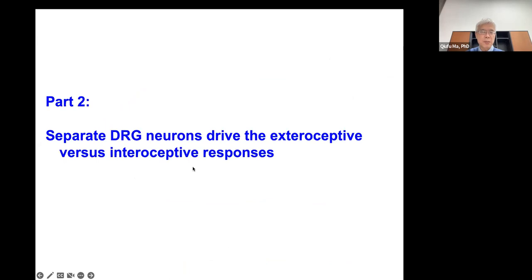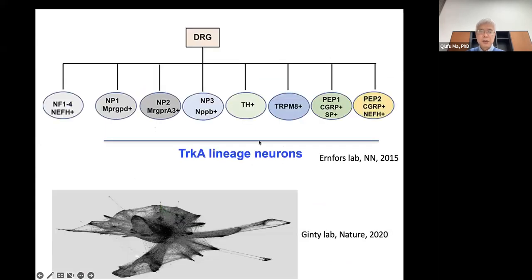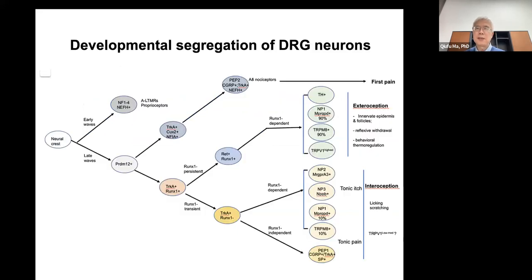The question is: at what anatomical level within the somatosensory system does segregation begin in driving these two behavioral sets? Even at the primary sensory neuron level, we can already see distinct DRG neurons driving exteroceptive defensive reactions to threats versus interoceptive responses to body injury. In single-cell sequencing studies by Patrick Ernfors and David Ginty, a number of DRG neurons have been classified. We focus on the TrkA lineage neurons — neurons that depend on the nerve growth factor receptor TrkA for survival.